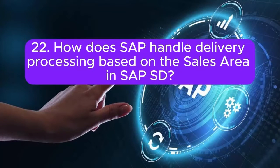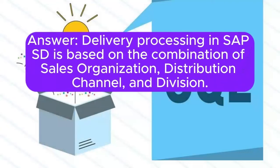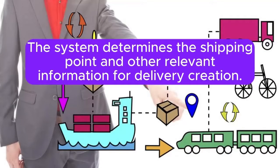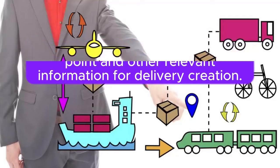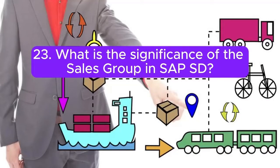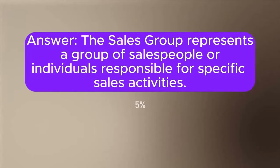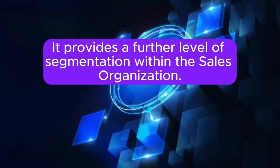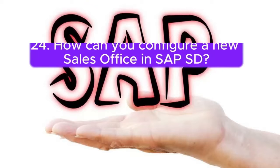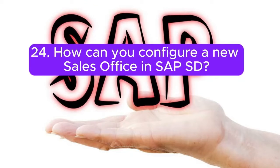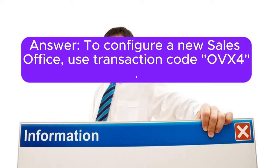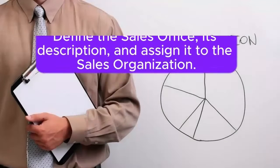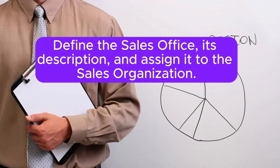Question 22: How does SAP handle delivery processing based on the sales area in SAP SD? Answer: Delivery processing in SAP SD is based on the combination of sales organization, distribution channel, and division. The system determines the shipping point and other relevant information for delivery creation. Question 23: What is the significance of the sales group in SAP SD? Answer: The sales group represents a group of salespeople or individuals responsible for specific sales activities. It provides a further level of segmentation within the sales organization. Question 24: How can you configure a new sales office in SAP SD? Answer: To configure a new sales office, use transaction code OVEX4. Define the sales office, its description, and assign it to the sales organization.